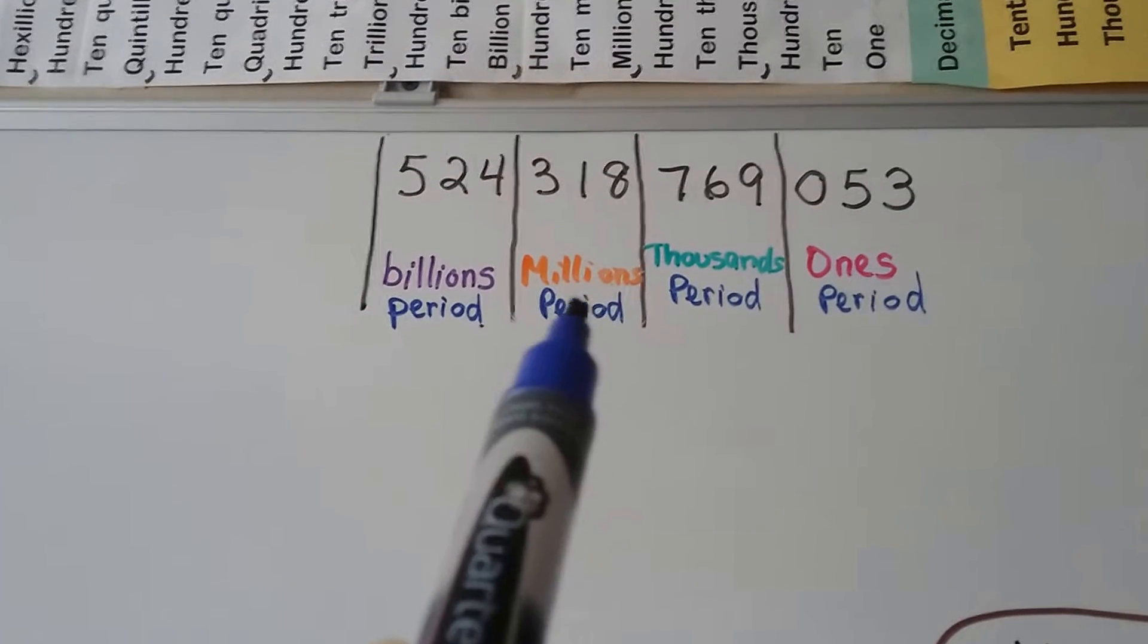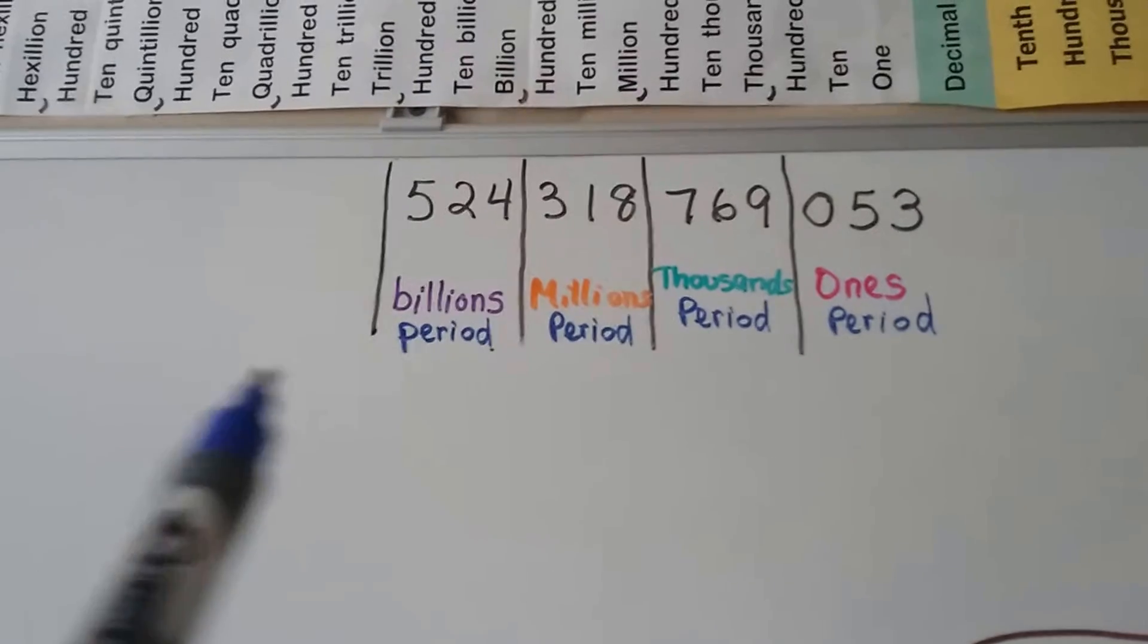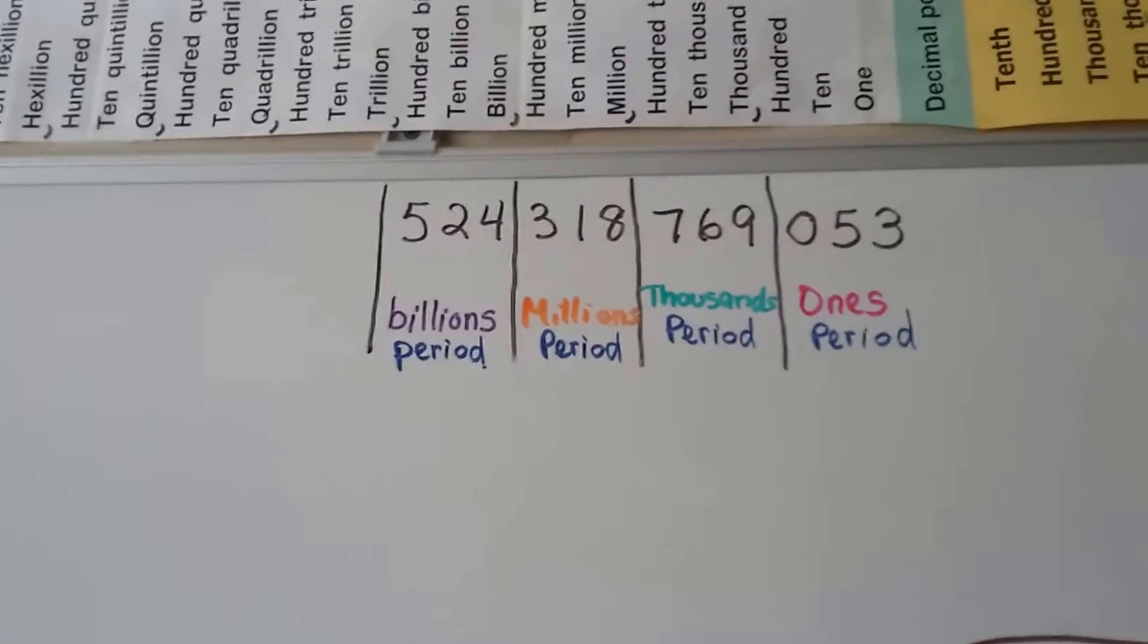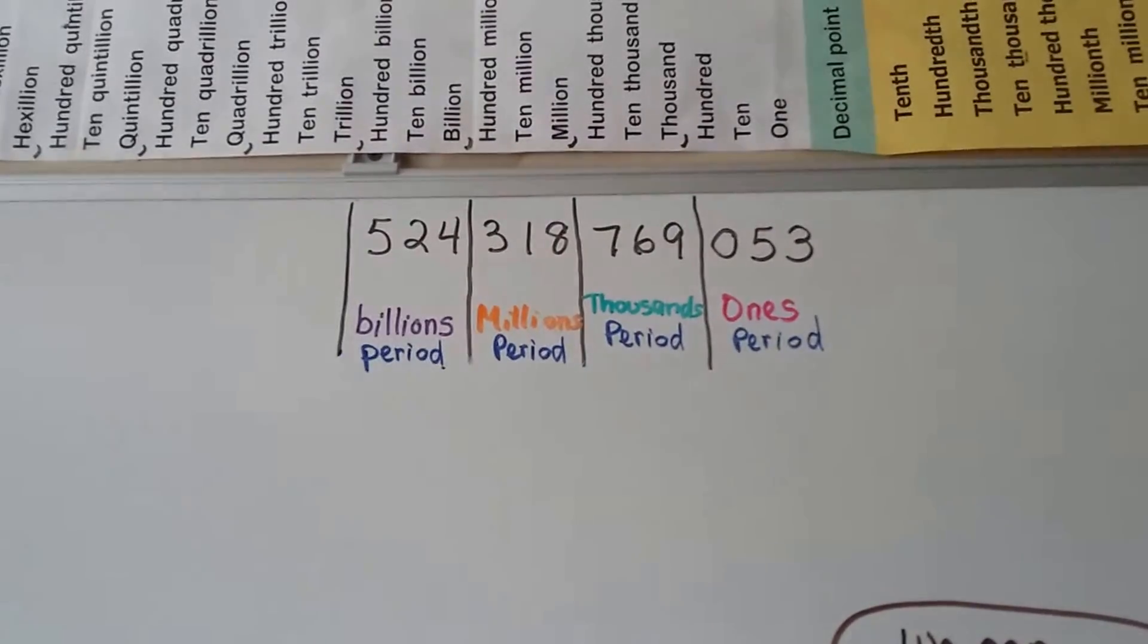This is the millions period, and that's got hundreds, tens, and ones. And so does the billions period. And the trillions period, and quadrillion and quintillion, it keeps going on. They each have a hundreds, tens, and one in each of their periods.